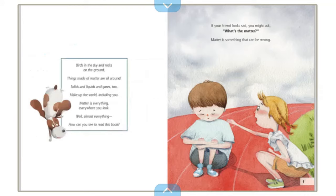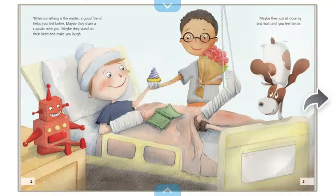How can you see to read this book? If your friend looks sad, you might ask, 'What's the matter?' Matter is something that can be wrong. When something is the matter, a good friend helps you feel better. Maybe they share a cupcake with you. Maybe they stand on their head and make you laugh. Maybe they just sit close by and wait until you feel better.